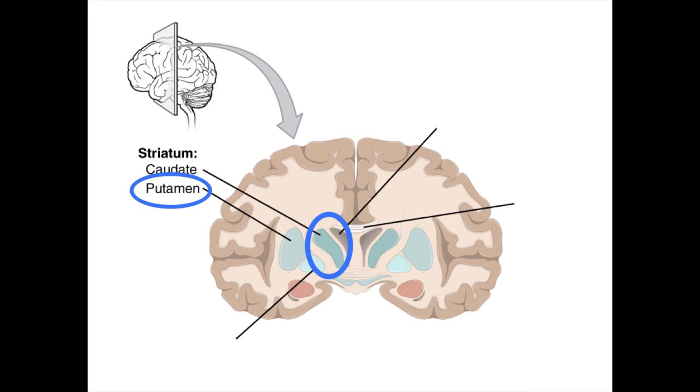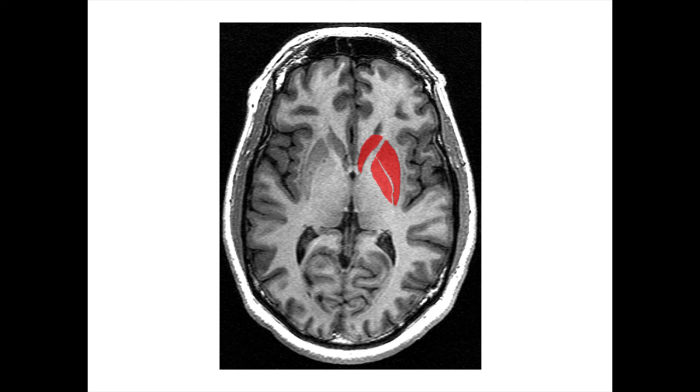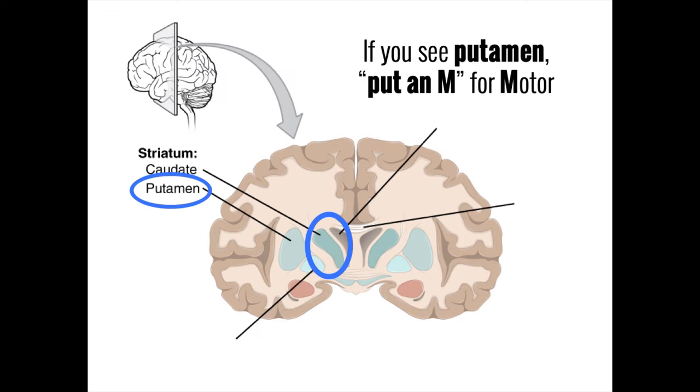In contrast, the putamen is more exclusively dedicated to motor functions and appears to play a role in both preparing and executing voluntary movements. This is illustrated clinically in patients who develop bleeding in the area of the putamen, known as a putaminal hemorrhage, who will often present with weakness or even complete paralysis of muscles throughout their body. So whenever you see the word putamen on an exam, look for the answer involving motor functions and put an M for motor.